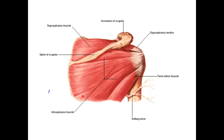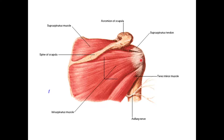The infraspinatus — as the name suggests, 'infra' meaning below the spine — takes its origin from the medial two-thirds of the infraspinous fossa along with the deep fascia covering it. The muscle ascends upward and laterally to reach the greater tubercle, inserting over the middle impression of the greater tubercle of the humerus.